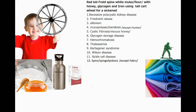Glycogen stands for glycogen storage diseases, and iron for hemochromatosis. 'Tall' means thalassemia, 'cart' is Kartagener syndrome, 'veal' is Wilson's disease, and 'cygnet' is sickle cell disease. I put Fabry disease and Hunter's disease apart from this picture because they are not autosomal recessive.